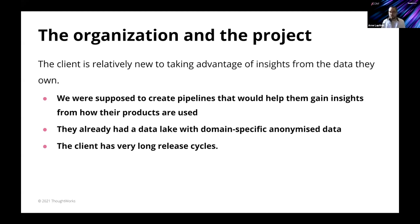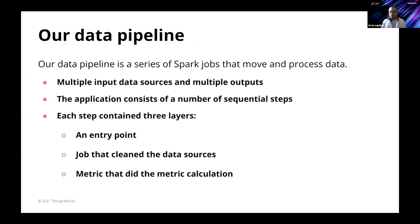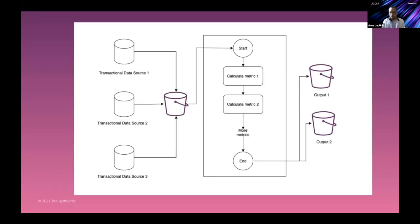This posed a number of challenges. The client also has quite long release cycles — even though we started a year ago, we've gone to production only once, and usually can go to production once or twice per year, which is quite a risky procedure requiring a lot of effort. Our data pipeline is essentially a series of Spark jobs for moving and processing data — a batch job with multiple input data sources and multiple outputs, with steps that calculate metrics from the data.